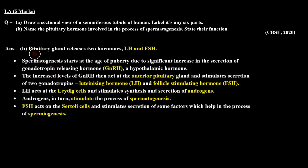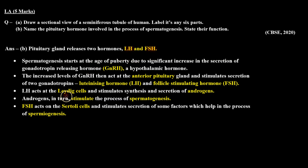For Part B, the pituitary gland releases two hormones — LH, luteinizing hormone, and FSH, follicle stimulating hormone. LH acts on the Leydig cells, which further synthesize and secrete androgens. Androgens stimulate spermatogenesis, that is the formation of the sperm.